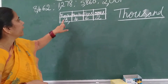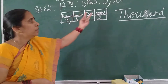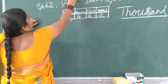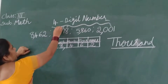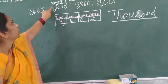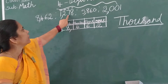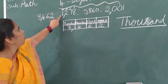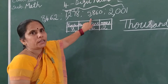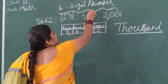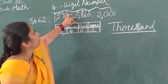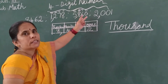8 is in the 1000s place, so 8,462. The 10s and 1s together we say as 62. Now the next number: 1s place, 10s place, 100s place, and 1000s place — so how will you read? 1,278. And the next: 1s, 10s, 100s, and 1000s — so how will you read? 5,860.